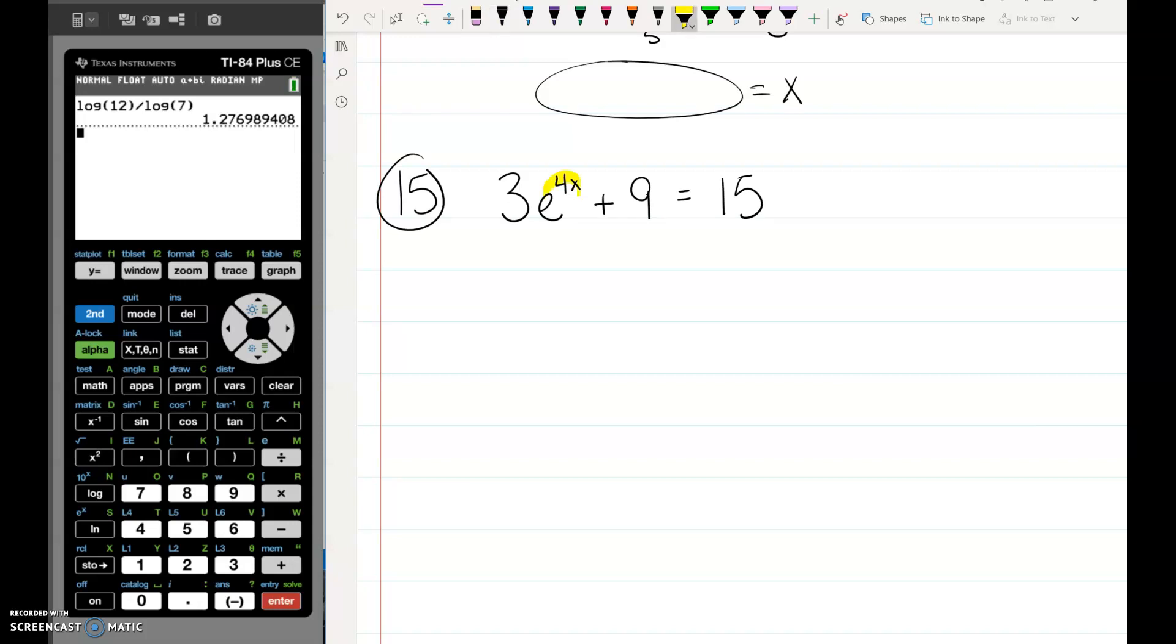Our first step is to get the thing that's raised to the exponent by itself. So we need to subtract 9 on both sides. 15 minus 9.